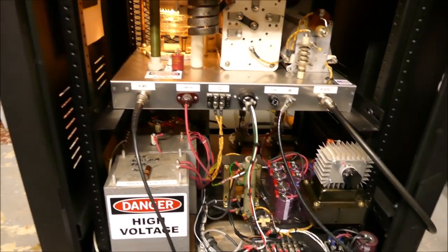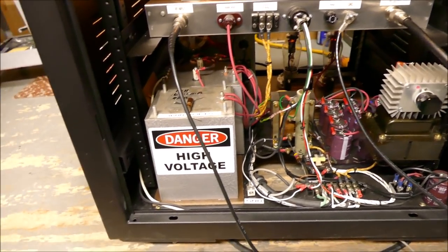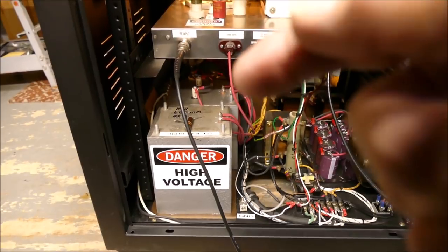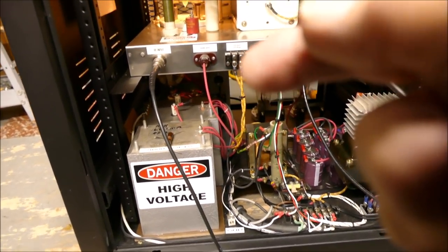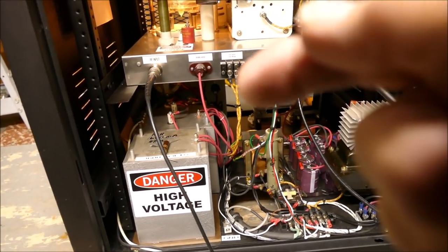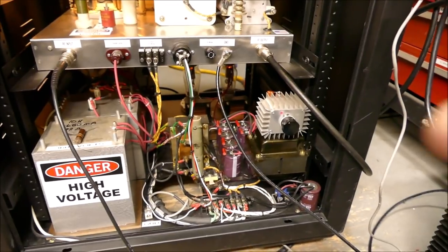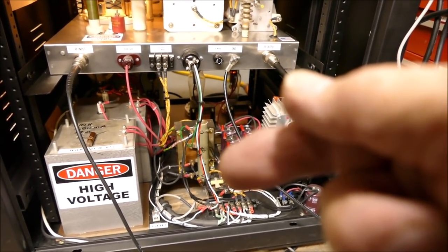And the bottom of the power supply, a little crowded down there. This first one is the choke and then behind that is the power transformer. Just on the other side of that is one of the filter capacitors, a 5,000 volt 5 microfarad. Down in here this is part of the grid bias circuit.